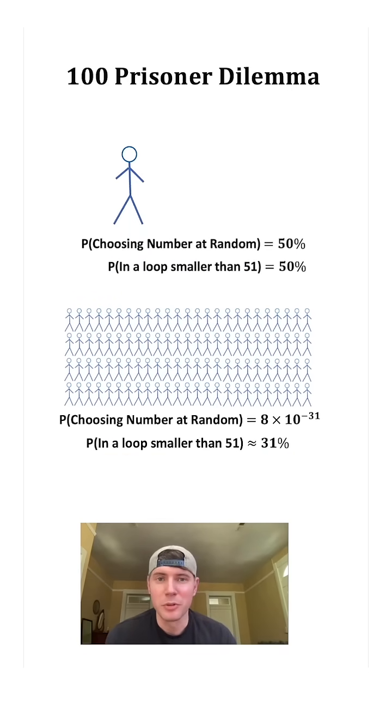It works because they're no longer independent events like before. Now everyone's success depends simply on the breakdown of the loops in the boxes. It will still lose around 69% of the time because 69% of the time there will be a loop with greater than 51 numbers. So it isn't a foolproof plan, but it is way better than 8 times 10 to the negative 31.